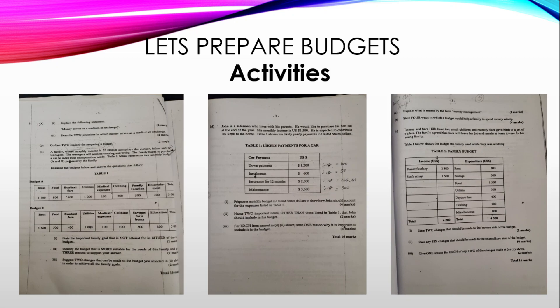For each item named, state one reason why it is important to include it in the budget. For transportation, he needs it to get to work since he doesn't have a car yet. For the two hundred dollars home contribution, he is giving money to his parents towards utility payments or household expenses, and he has to factor that in so it comes out of his monthly income. His income must be kept in mind because all these expenses — the one hundred dollars, fifty dollars, one hundred and sixty-six dollars and sixty-seven cents, and three hundred dollars calculated for the monthly car expenses — plus the two hundred dollars and transportation, should add up to his one thousand five hundred dollars income.